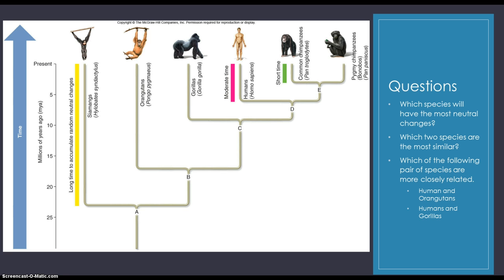The answer to the second question is the two species of the chimps would be the most similar. That's because the two had the shortest amount of time to accumulate neutral mutations or neutral changes. The last question follows the same logic. Humans and gorillas would be more closely related than humans and orangutans because they had a smaller amount of time to accumulate neutral changes than the other pair. Good job if you guys got all three of them right.